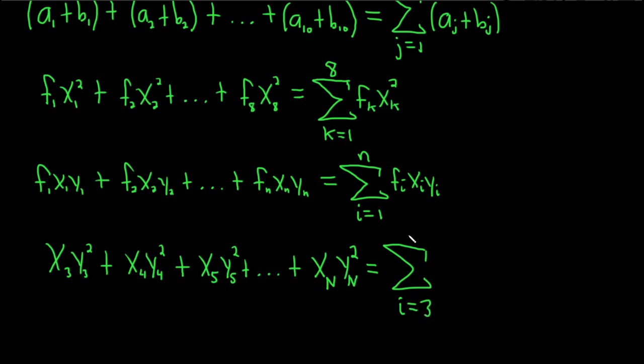And we're going all the way to capital N, so the capital N goes up there, and it'll be simply x sub i, y sub i². Right? And again, we're starting at 3 and finishing at capital N.